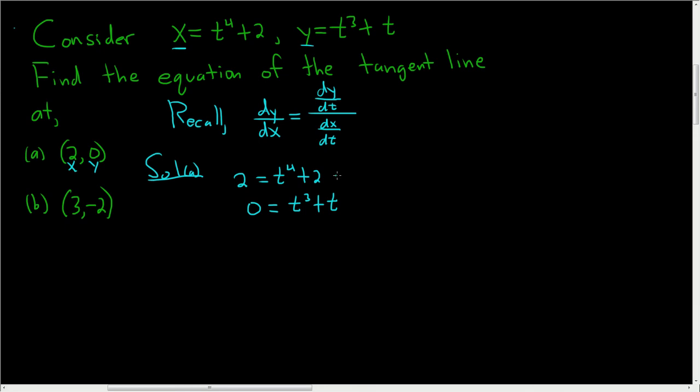Using the first equation we have t to the fourth equals 0. Taking the fourth root of both sides gives us t equals 0. Now we have to check, does t equals 0 work in the second equation? Let's check. So 0 is 0 cubed plus 0? Yes it is. So t is equal to 0.